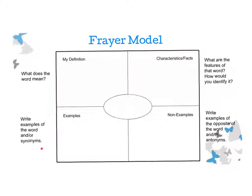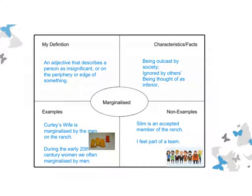You'll notice with the examples and the non-examples, there are a few different ways that you can actually approach it. To give you a clear example of a word we've already looked at, so we're already pretty familiar with its meaning — look at 'marginalised.' Marginalised is an adjective that describes a person as insignificant or on the periphery or edge of something. For characteristics and facts, you're looking out for things like if someone or something has been outcast by society, ignored by others, or thought of as being inferior — they could be considered to be marginalised.